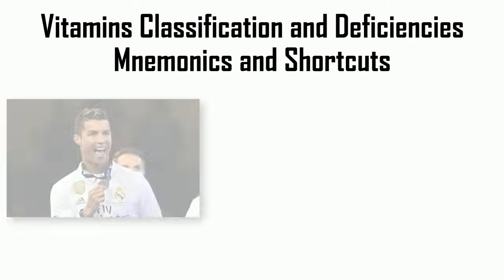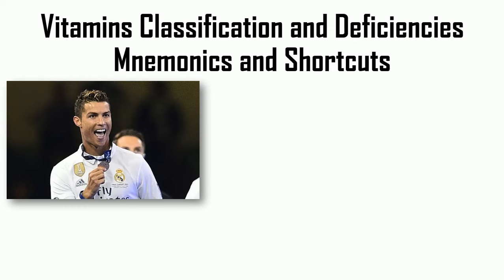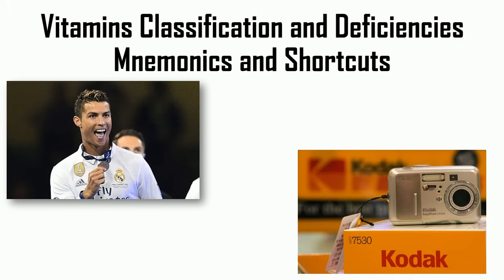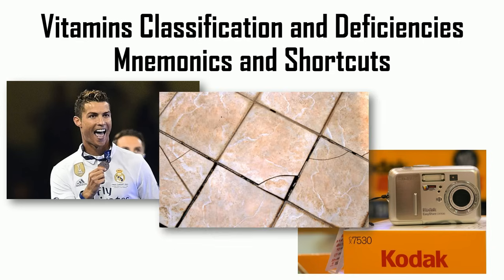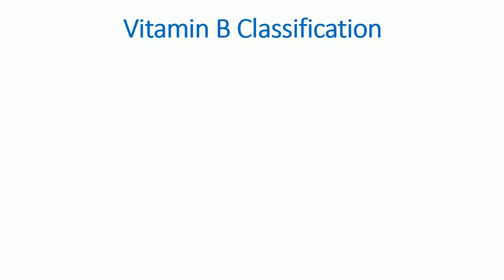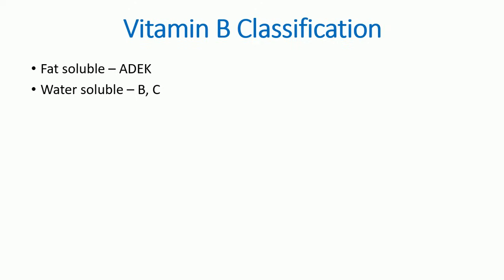First, we'll talk about classifications. You need to remember 'Ronaldo playing football' for a particular club, and also 'Kodak' and a 'cracked floor' — we'll get to those in a moment. The general classification of vitamins gives us fat-soluble vitamins: A, D, E, and K; and water-soluble vitamins: B and C. We're not much bothered about A, D, E, and K because they don't have subclasses, but vitamin B does.